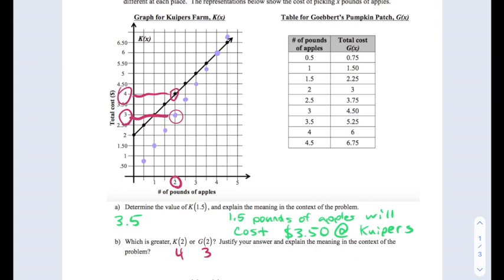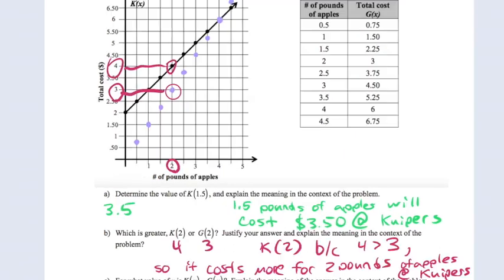As you can see, Kuipers, the k function, would have the greater value at an input of 2. So what we can conclude is that because 4 is greater than 3, that means k(2) is greater than g(2), which means that it costs more. Because k(2) is telling you how much it costs for the apples, it costs more for 2 pounds of apples at Kuipers rather than Gobert's.